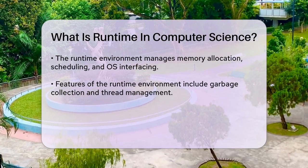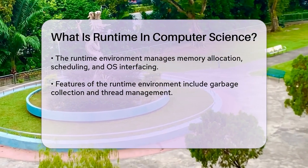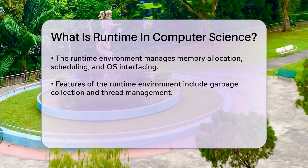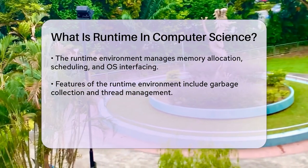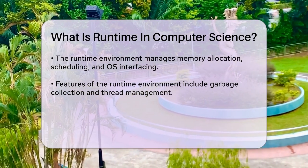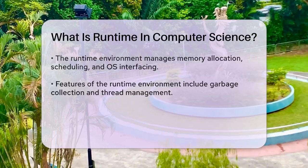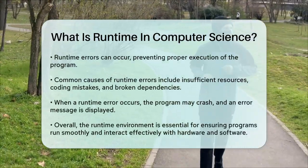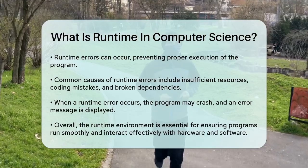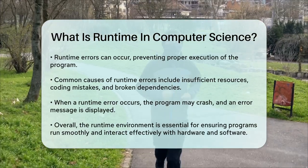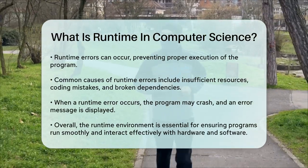Runtime errors can occur during this phase, which are problems that prevent the program from executing correctly. These errors can be due to insufficient system resources, coding mistakes, or broken dependencies. When a runtime error happens, the program might crash, and the runtime environment will usually display an error message indicating what went wrong.